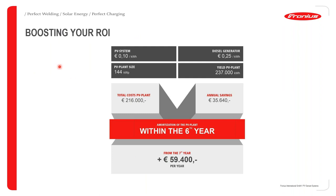How do you boost return on investment using a PV genset system? This is a key consideration that customers will relate to. We are comparing the cost of energy for a PV system integrated into a generator system. The cost of energy from the PV system is about 0.1 euros per kilowatt hour, whereas for the diesel generator — considering fuel and all associated costs — it comes to about 25 euro cents per kilowatt hour.